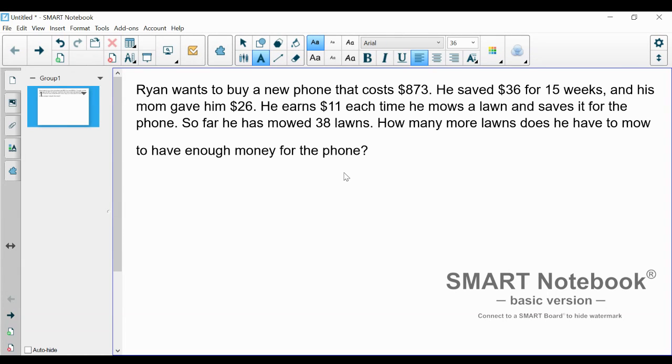Ryan wants to buy a new phone that costs $873. He saved $36 for 15 weeks, and his mom gave him $26. He earns $11 each time he mows a lawn and saves it for the phone. So far, he has mowed 38 lawns. How many more lawns does he have to mow to have enough money for the phone?